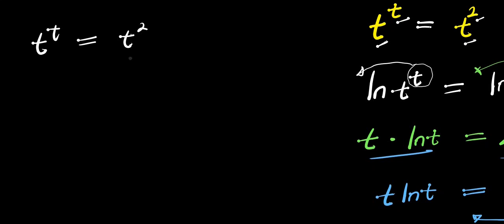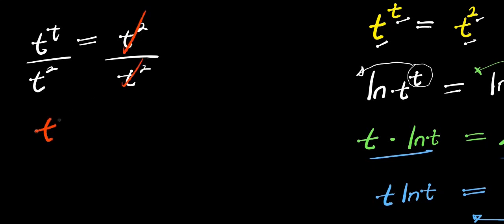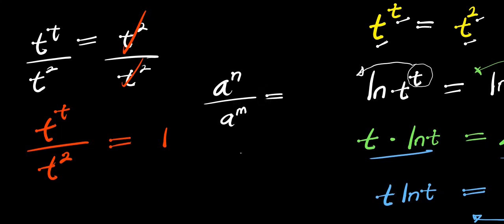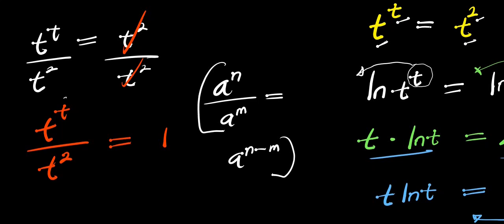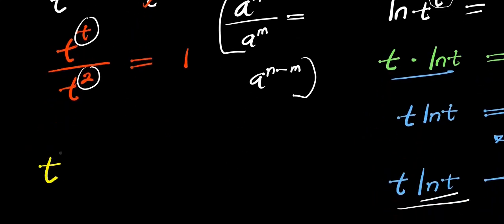In this second method, we divide each side of the equation by t^2. We get t^t divided by t^2 equals one. Using the identity a^n divided by a^m equals a^(n minus m), we get t^(t minus 2) equals one.